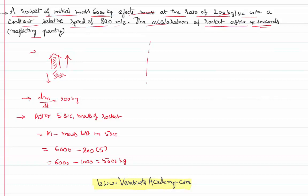Neglecting gravity, what is the acceleration of the rocket? I can write F resultant equals Ma. F resultant is the rate of change of momentum, that is Ma. So d/dt of (mv) equals Ma.